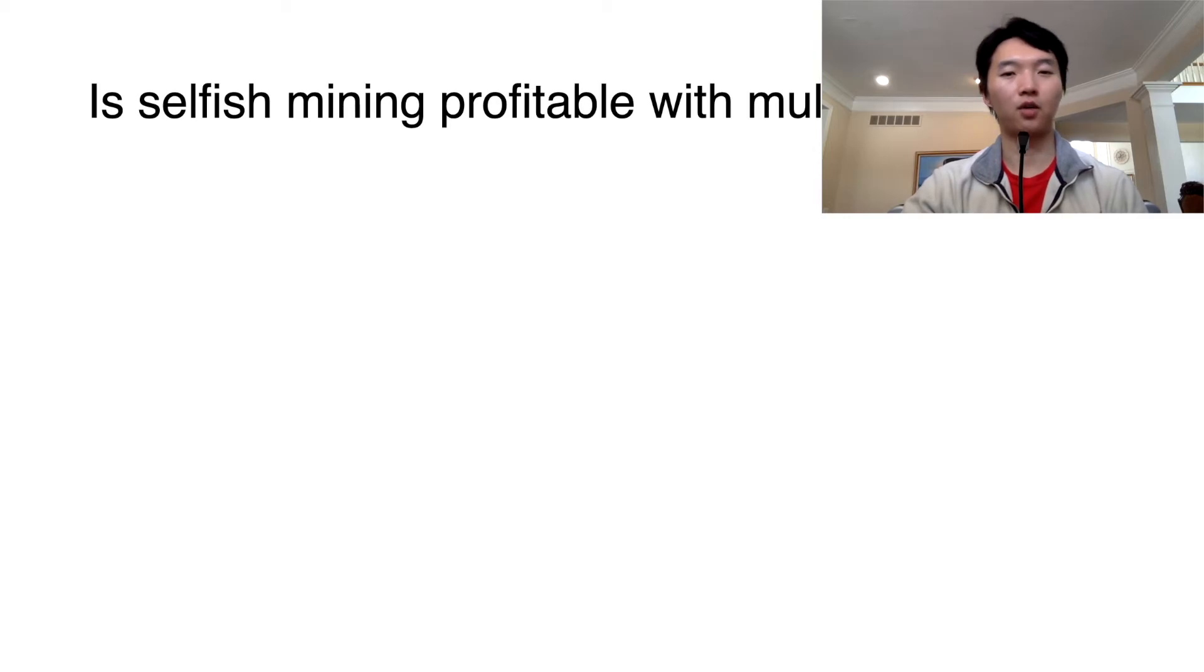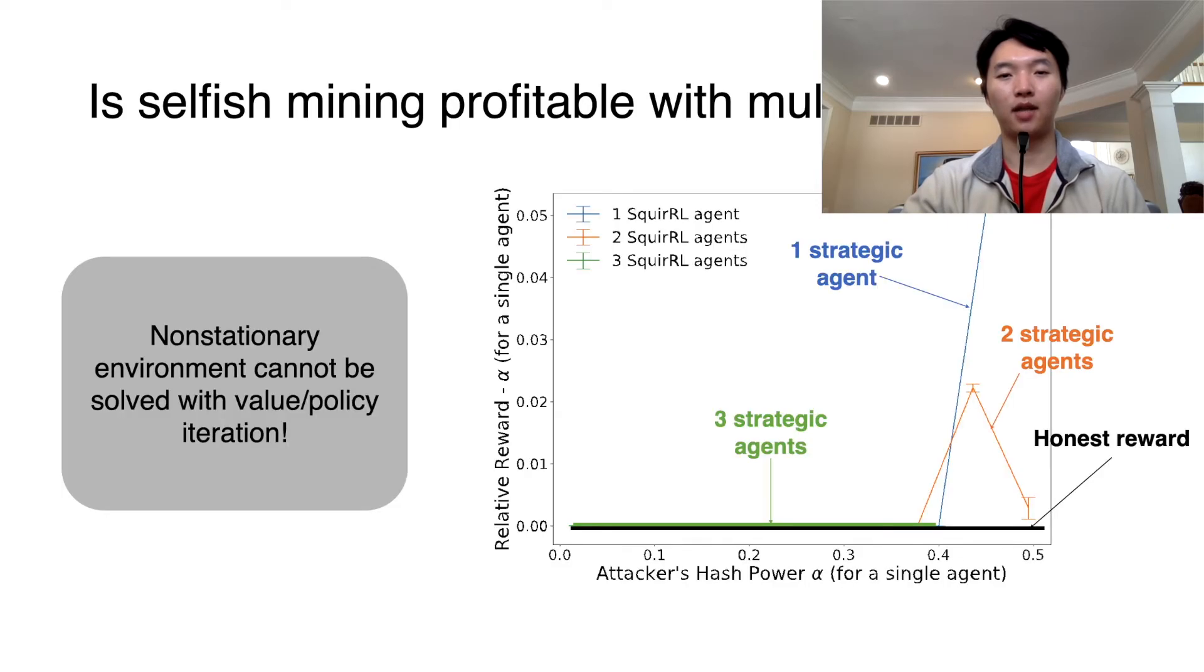Here we consider the question of whether selfish mining is profitable with multiple players. Here, x-axis is the attacker's hash power, and the y-axis is the excess relative reward it receives. The agents are all adaptable, so it's not possible to solve the optimal strategies using value or policy iteration. We see in the graph that once we have 3 squirrel agents with equal hash power each, they no longer receive excess reward.